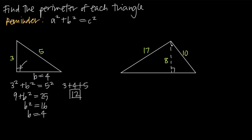What about this second example here? We've been given this triangle. We know that the length of this side is 17 units, that the length of this side is 10 units, but we don't know the length of the base. So we're going to need to find that in order to find the perimeter of this triangle. This triangle here is not a right triangle, but as you notice, we can divide it into two separate right triangles.